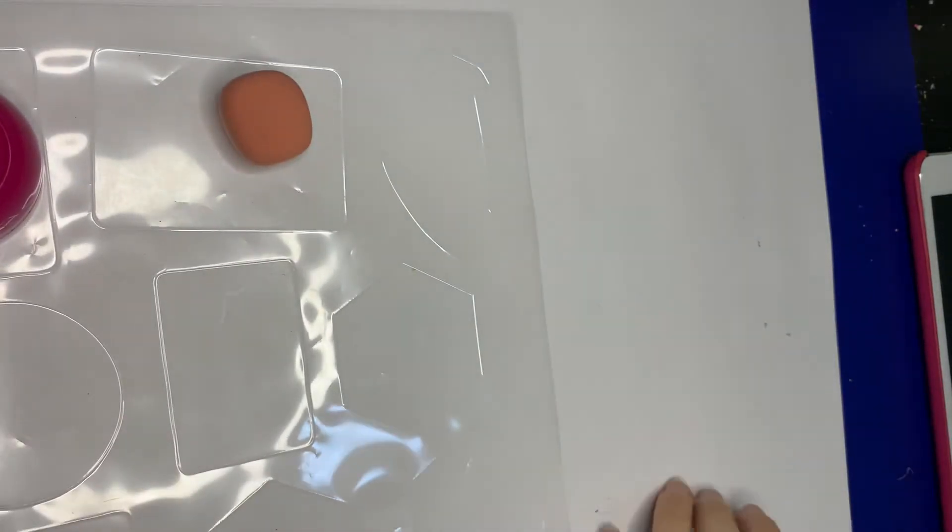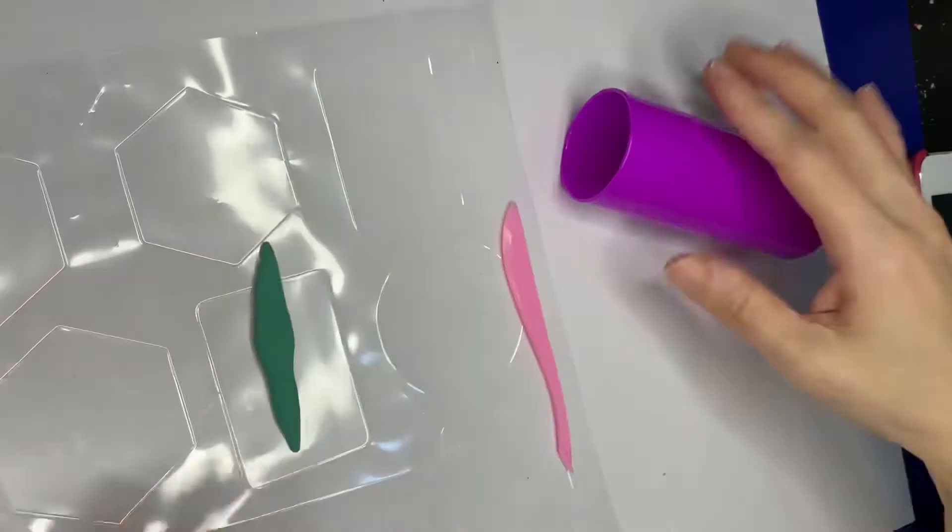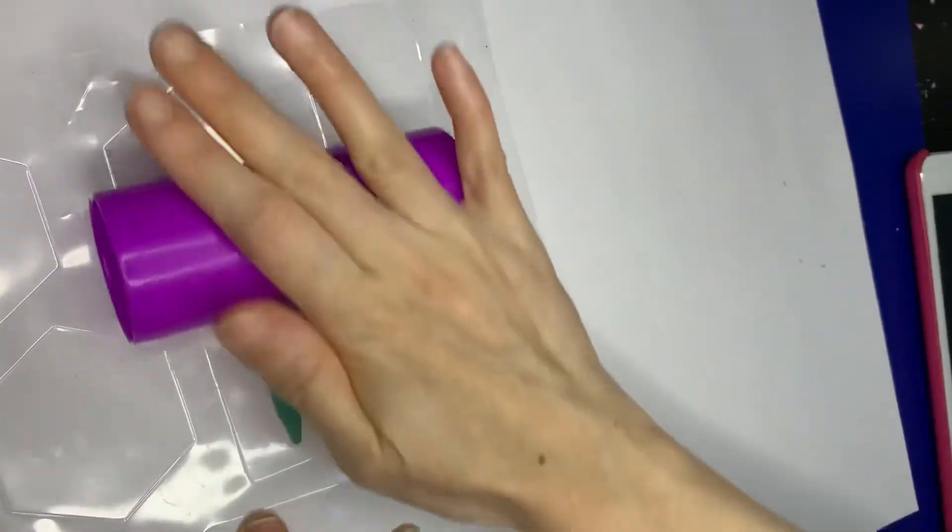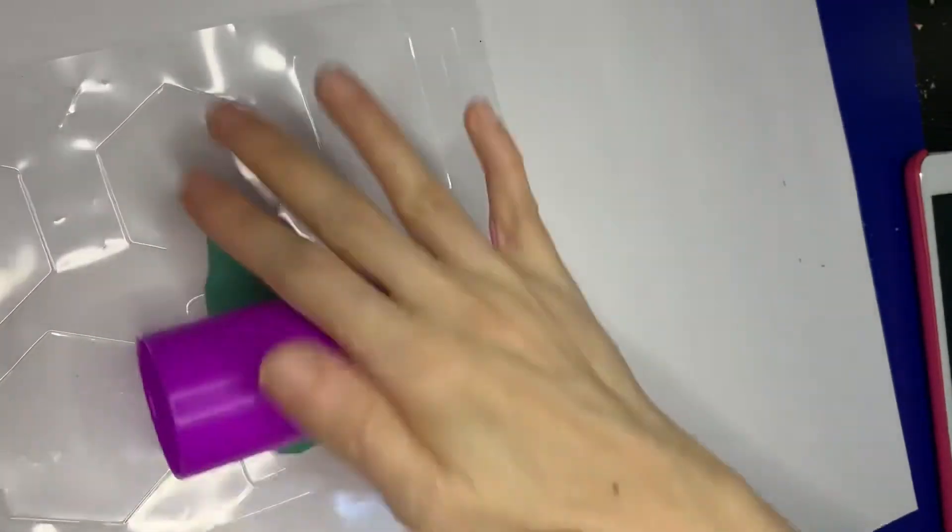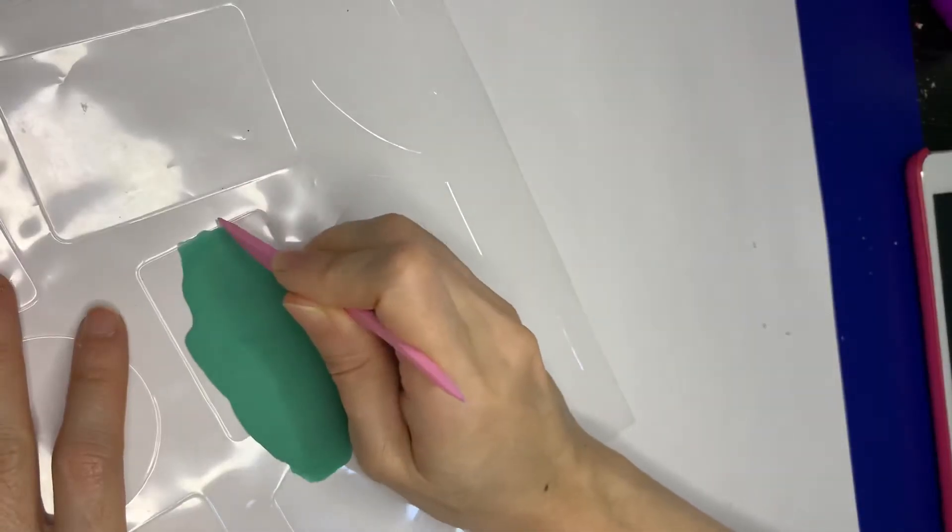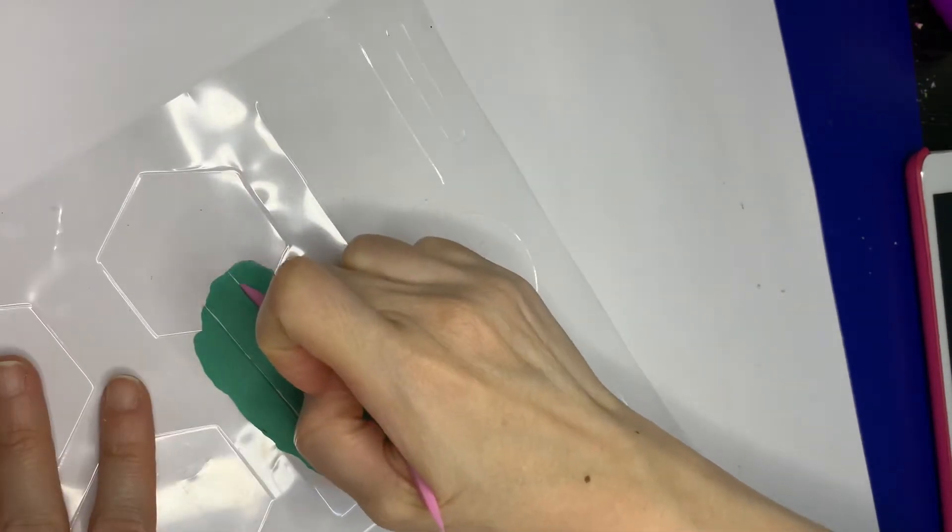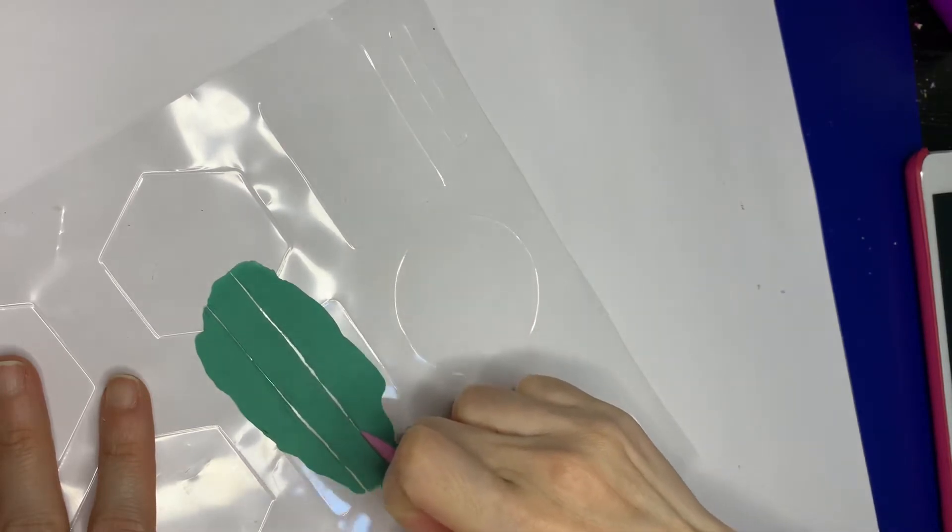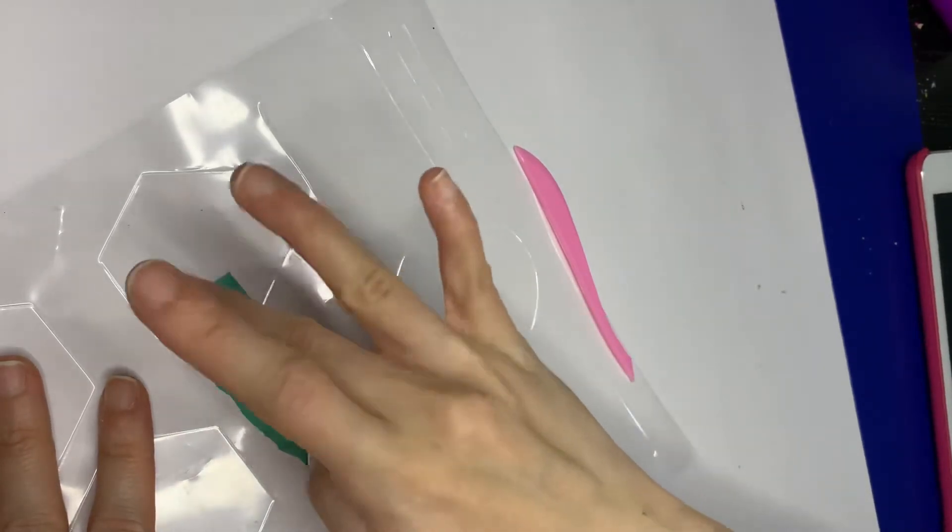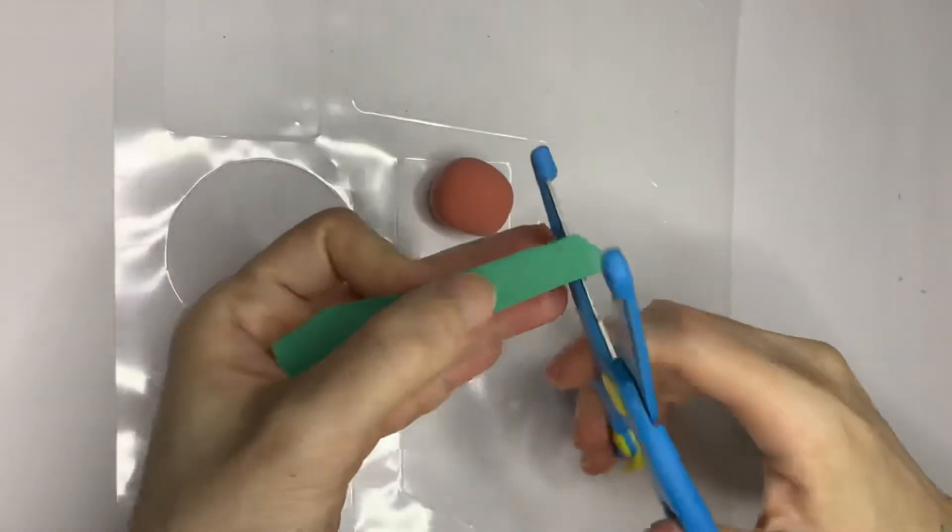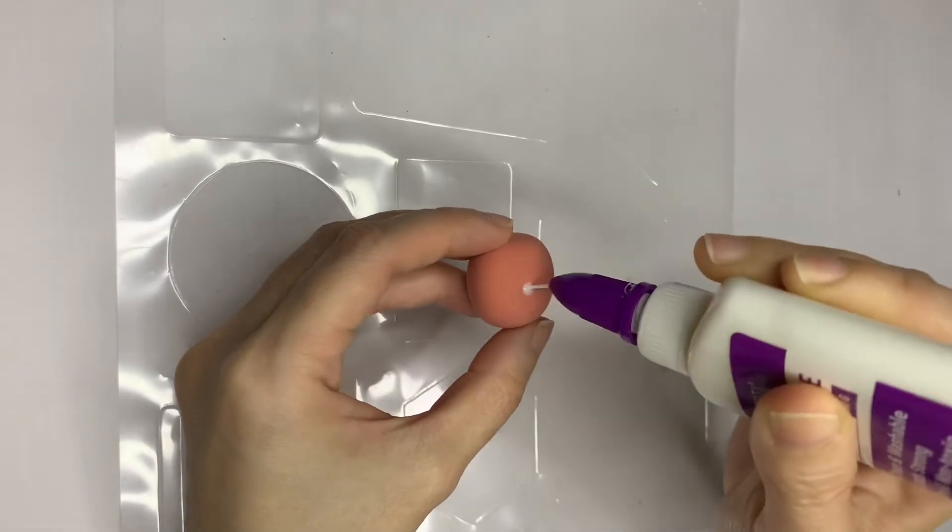Use tan color to make the body. Use green to make a long stripe and then use the roller to flatten it as much as possible. Then use the plastic knife to cut out the width that we need. Leave it overnight for it to be fully dried up. Now we cut the end to make it flat. Using normal glue, wrap the top over the body.